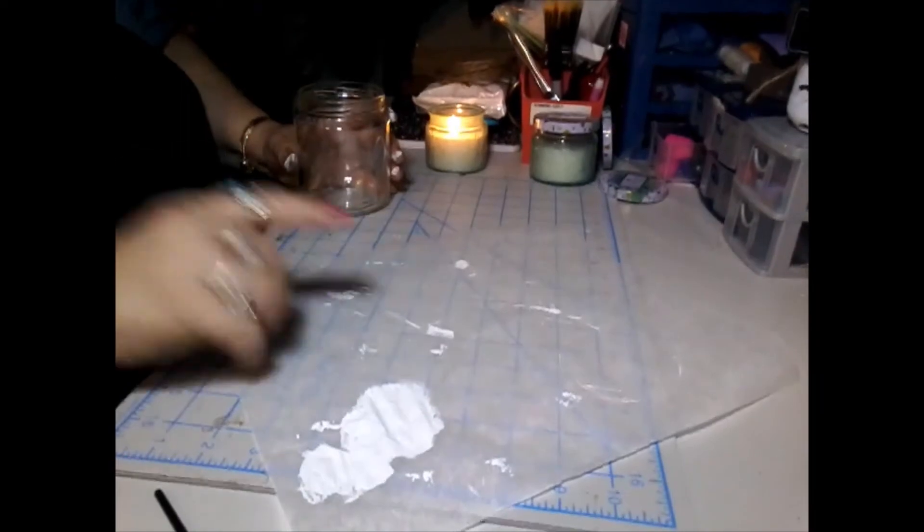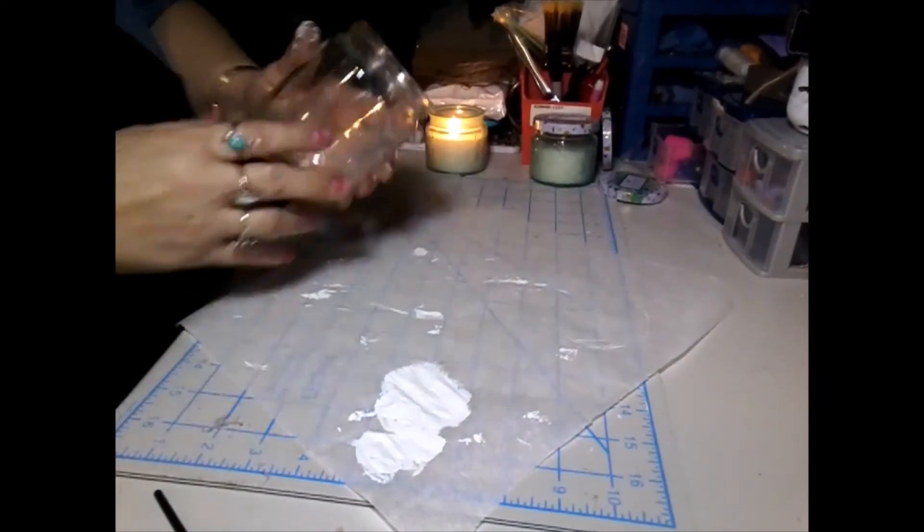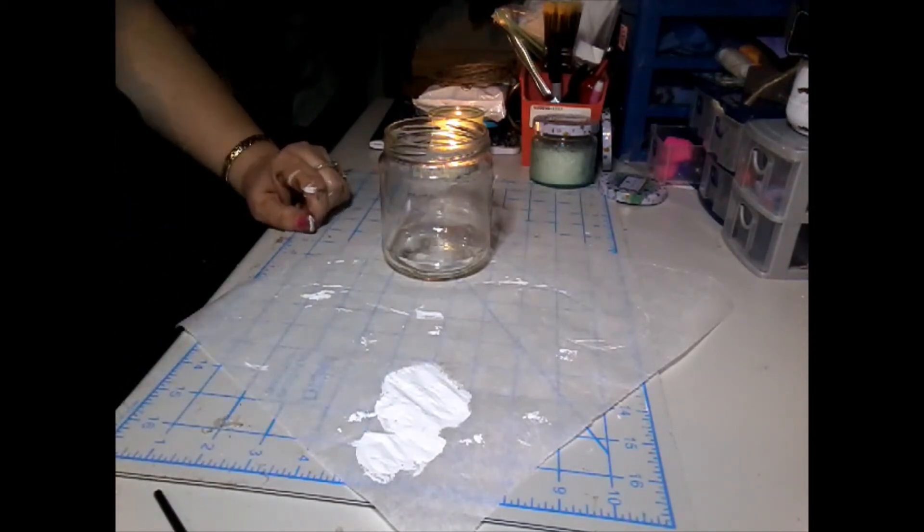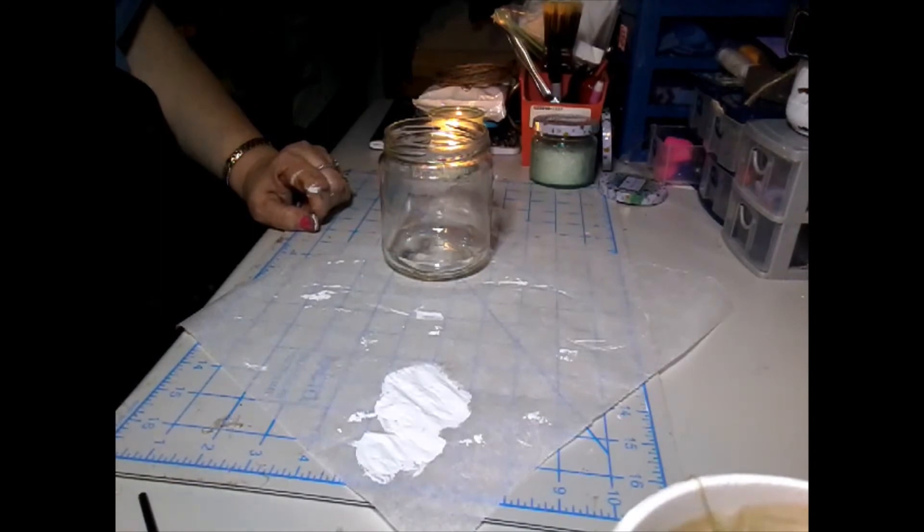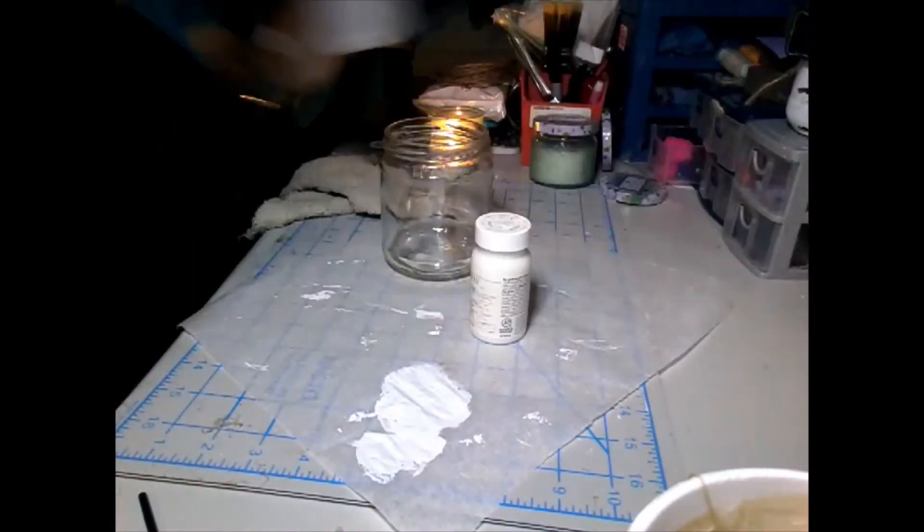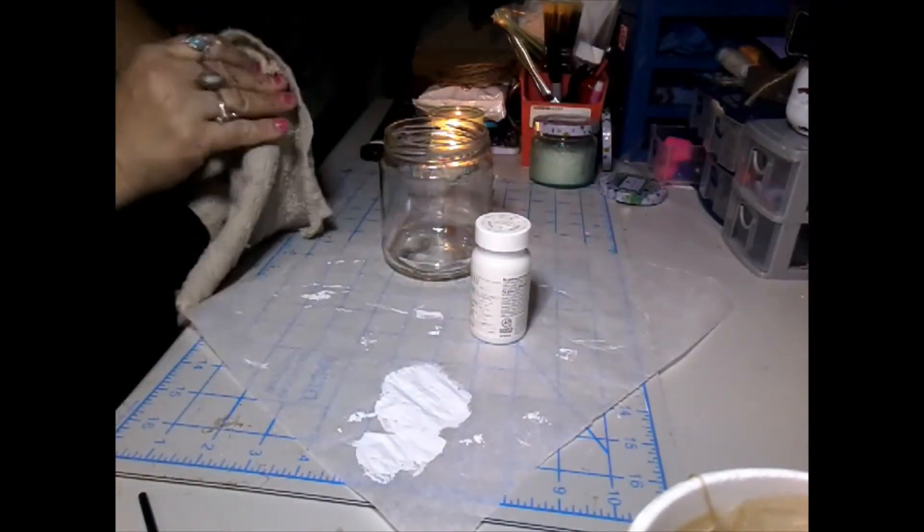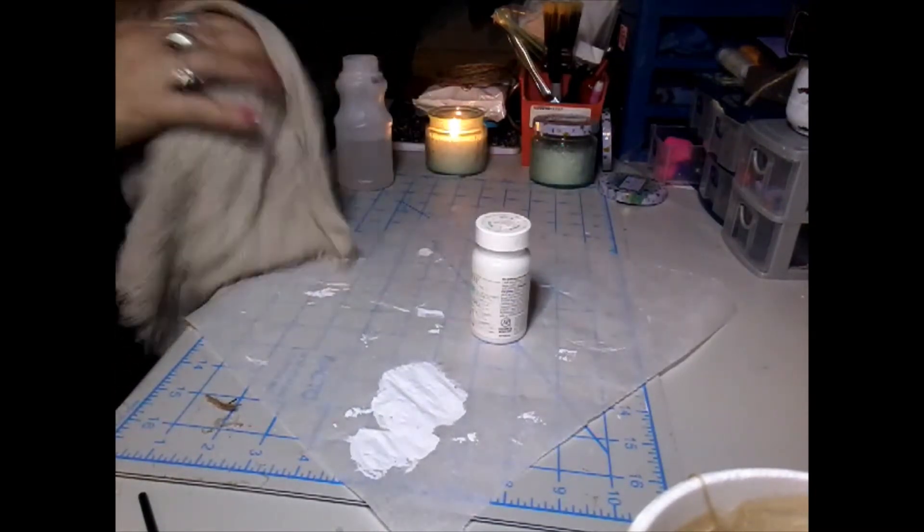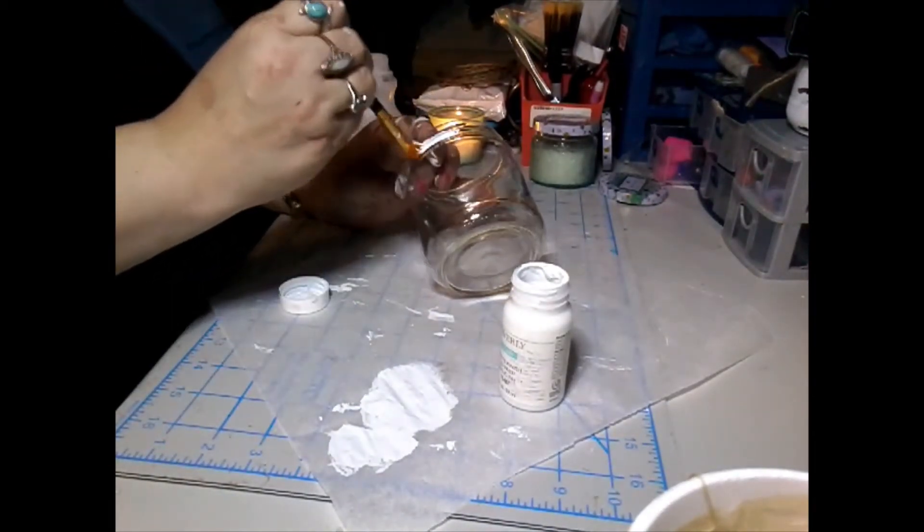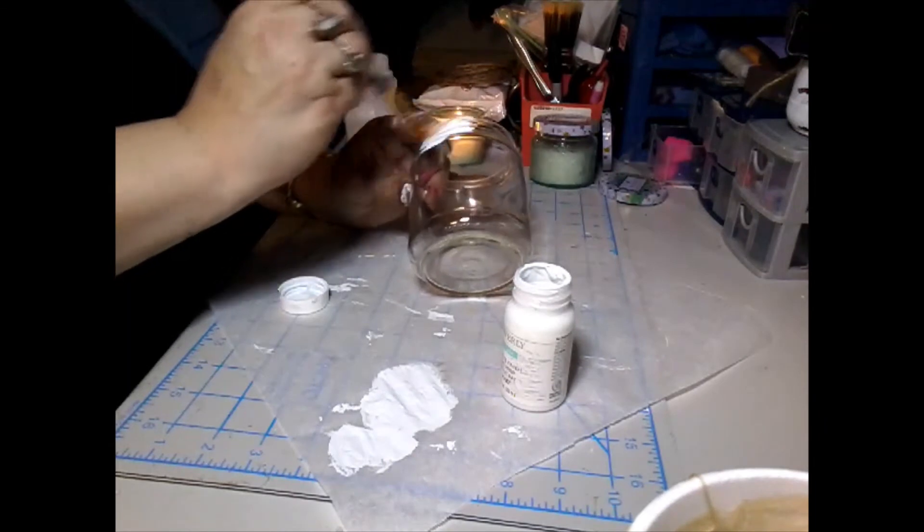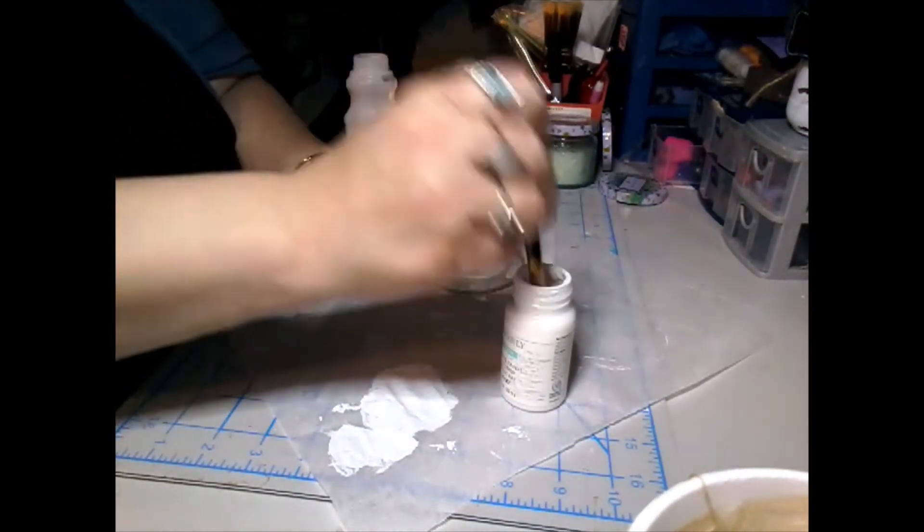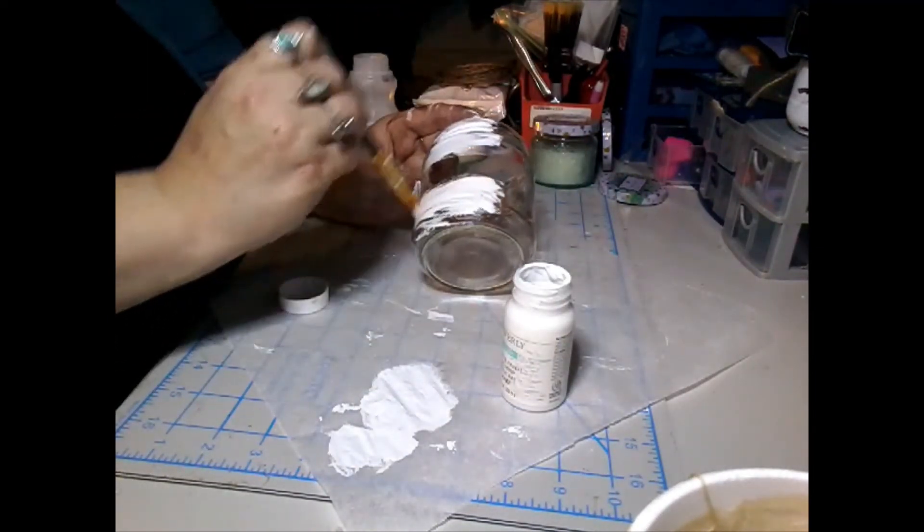Now with this second jar, it's a little smaller, it was actually a salsa jar. I'm going to also paint it in the Waverly chalk paint in the color white. It's the same process as before. We're going to wipe it off with alcohol to get the oils and stuff off from holding it. The paint holds easier if we do that. I'm just going to start painting it. I'm going to paint it all the way around, all the way to the top. After the first coat dries, we'll give it another coat.